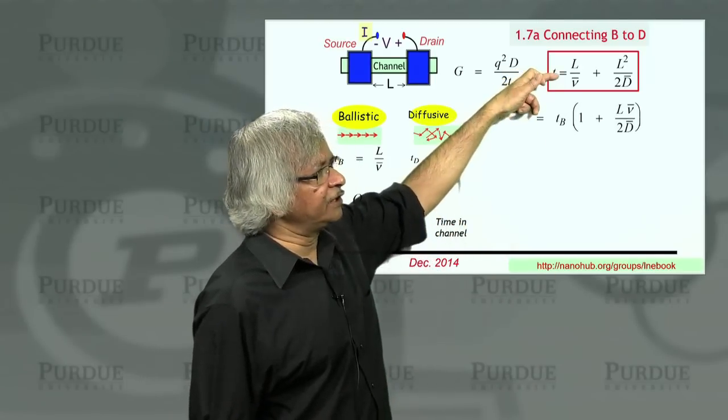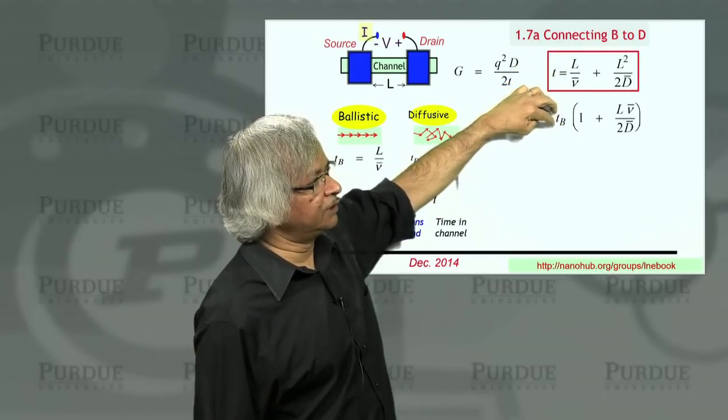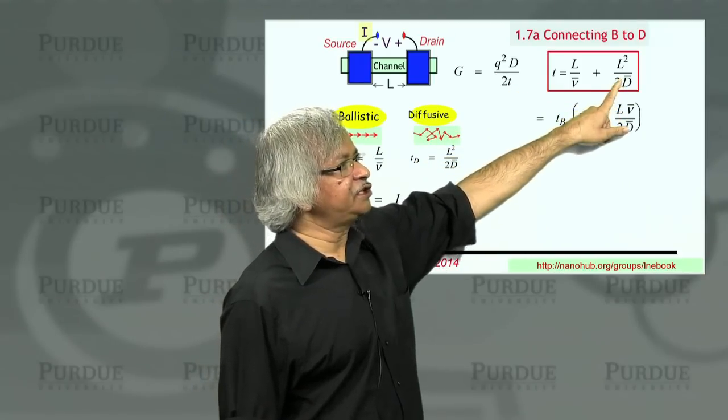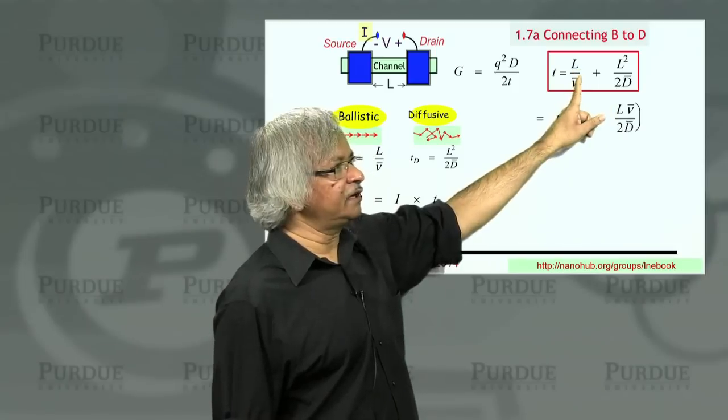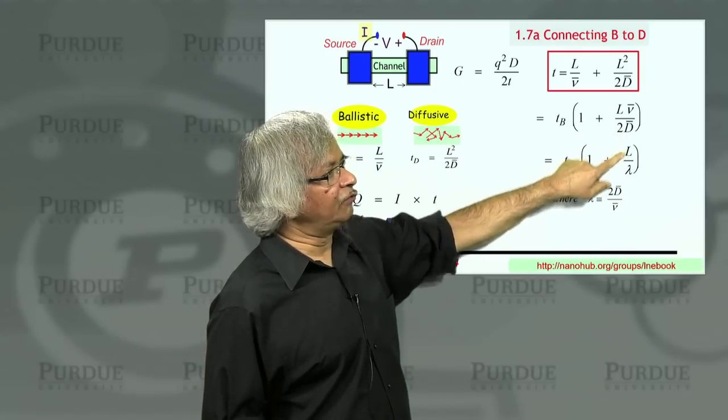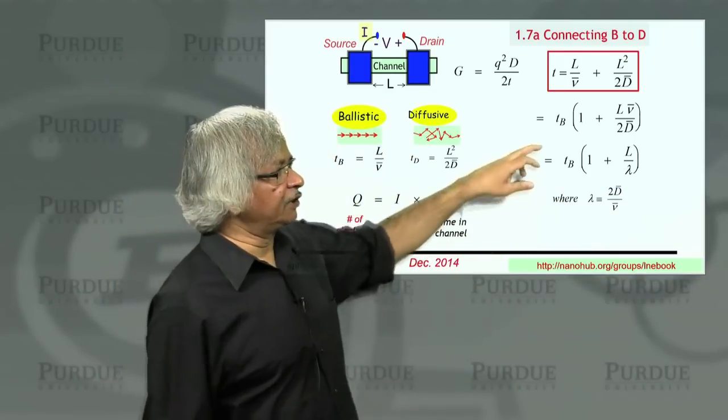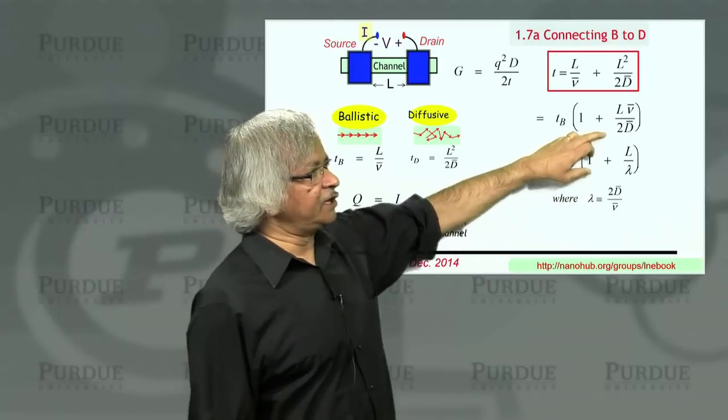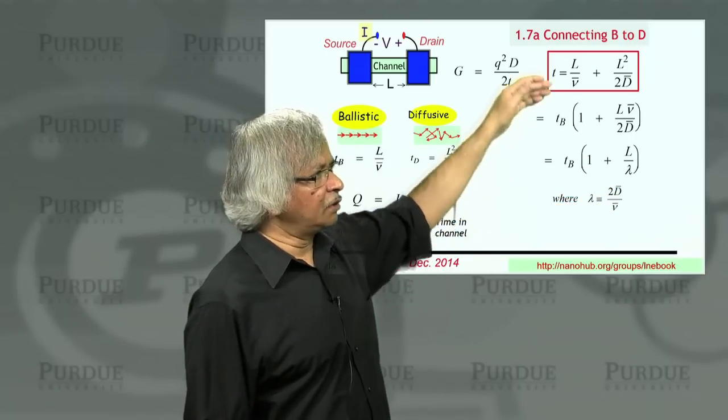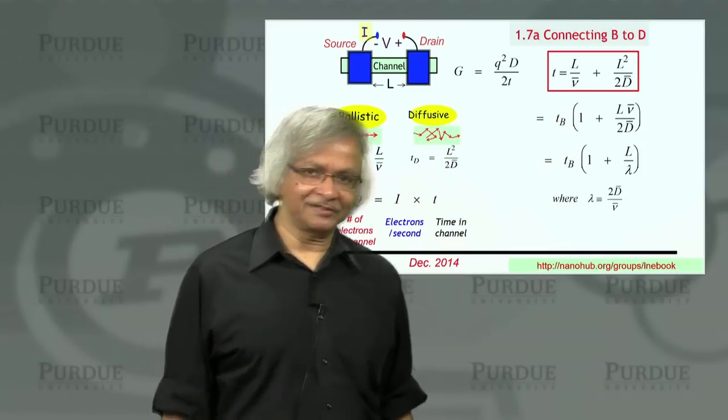If you accept that, you could rewrite it in this form. This first term is the ballistic time, so I can pull that out. What we have here is the ratio of the diffusive time to the ballistic time. That's what we have written here, which you could rewrite in the form L over lambda, where this lambda is like the mean free path. For the moment, we have just defined the lambda as the ratio of this diffusion coefficient to the average velocity, 2D over V. So this is just a little algebraic rearrangement of things.